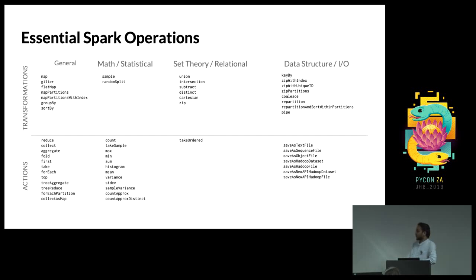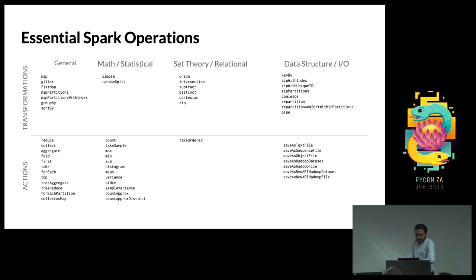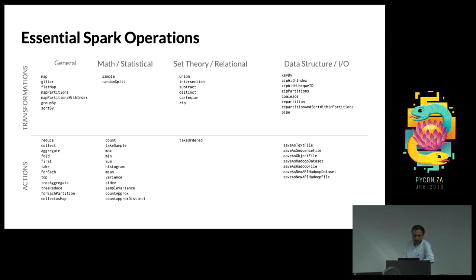Spark has a general-purpose operational API across Java, Python, and Scala with the same function names. General-purpose operations include map, filter, flatMap, partition, groupBy, and sortBy. For statistics, there's sample and randomSplit. Set theory provides union, intersection, subtract, and distinct. For data structure and I/O, you have pipe, coalesce, zipPartition, and zipWithIndex. Actions include reduce, collect, aggregate, fold, first, and take. Statistical operations include max, min, sum, histogram, standard deviation, and variance. File-saving actions include saveAsTextFile and saveAsSequenceFile.